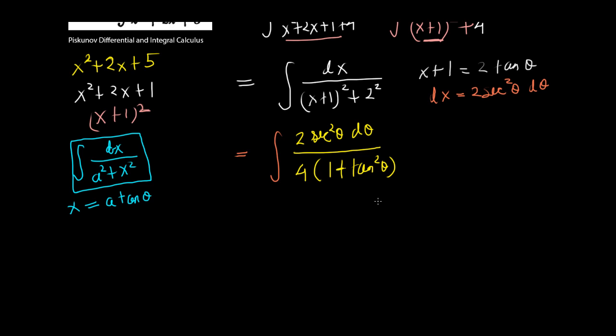And now, you should remember that 1 plus tangent squared of theta is nothing but secant squared of theta. That's one of the basic trigonometric identities. So, 1 plus tangent squared of theta is secant squared of theta. But we have a secant squared of theta up. So, that cancels out with that.